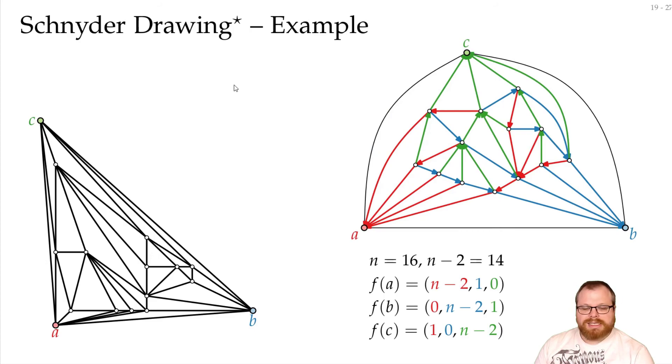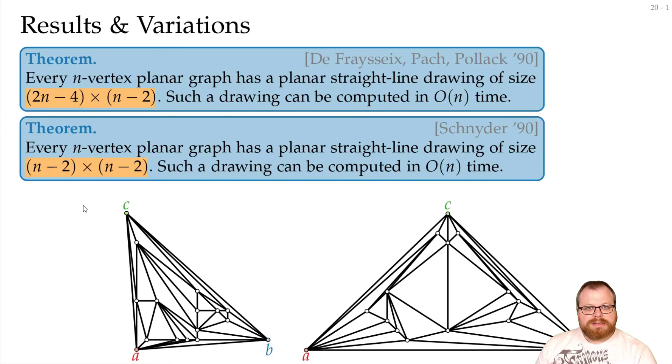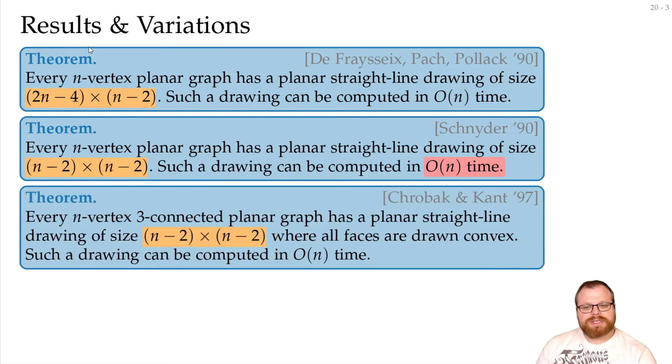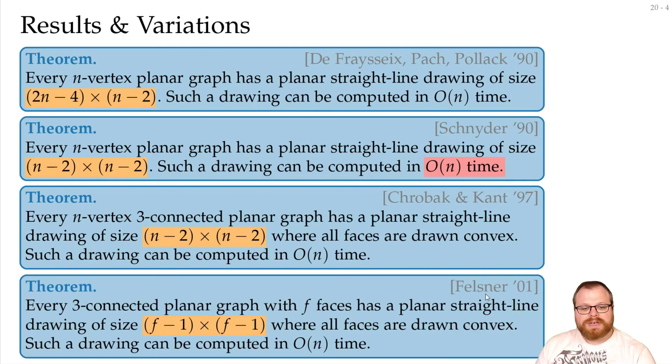And again in the exercises, you will show that this drawing is indeed planar. So we've proven this result, except for the running time, which we will do in the next part. There's one more variation I want to tell you about first. Last time you heard about the Krebach and Kant variation of the canonical order, where we get (n-2) times (n-2) area, and faces convex. There's also such a variation for the Schnyder algorithm by Stefan Felsner, where we get (f-1) times (f-1) area, where f is the number of faces, and also all of them are convex.